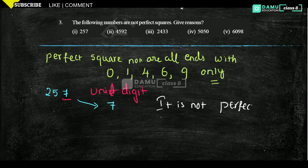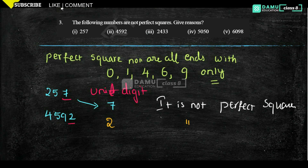Our next one is 4592. Unit digit is 2. Since 2 is the unit digit, it is not a perfect square.